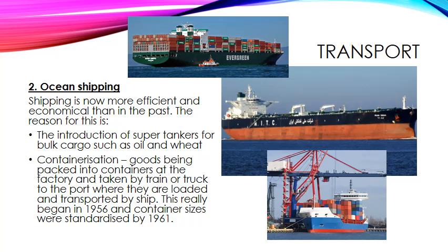These tankers take away bulk cargo such as oil and wheat. The other technological advancement in transport is containerisation — goods being packed into containers. Have a look at how many containers they can fit on these ships — it's quite amazing. The containers are packed at factories, then transported by rail or road to the ports and loaded onto ships by cranes. This really began in 1956 and container sizes were standardised in 1961.